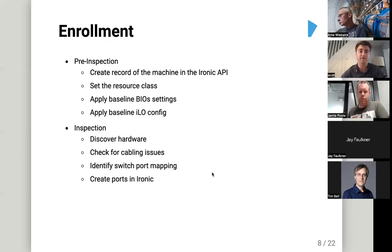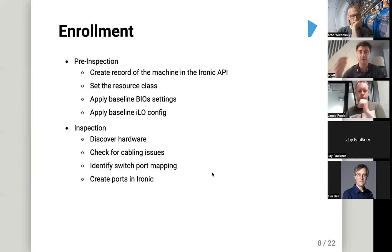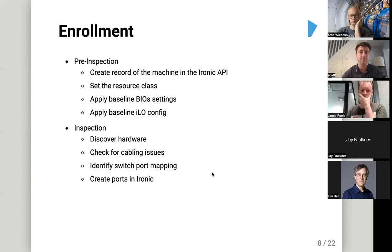We use inspection rules to identify where the server is plugged in, and that helps us verify there are no cabling issues. This is important because if we need to troubleshoot with the networking team we need to make sure our assumptions about where things are plugged in are correct — they'll be setting up TCP dumps on specific switch ports and we want to make sure everything is as expected.